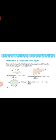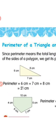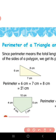Next is the Perimeter of Triangle and other figures. Since perimeter means the total length of the boundary, we add the lengths of all sides of a polygon to get its perimeter. Our first figure is a triangle with sides 6 cm, 7 cm, and 8 cm. Perimeter equals sum of all sides: 6 cm plus 7 cm plus 8 cm, which equals 21 cm. So the perimeter of this triangle is 21 cm.